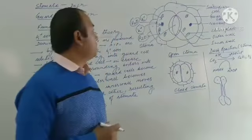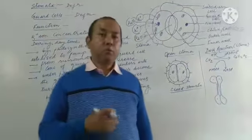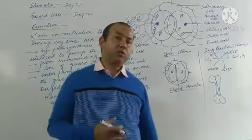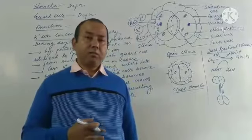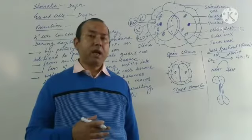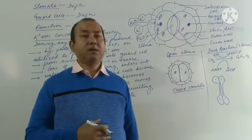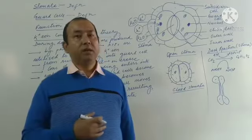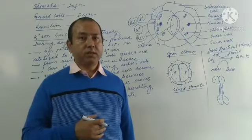This is about the mechanism of opening and closing of stomata. After this topic, we will discuss external and internal factors affecting the rate of photosynthesis. Thank you.